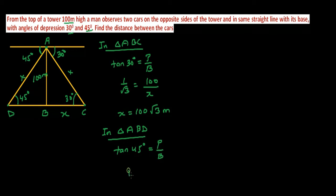Tan 45 is 1 equal to perpendicular that is 100 base. Let us suppose the length of DB be Y. So this will be Y. After cross multiplication, you will get Y equal to 100 meters.